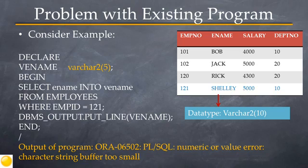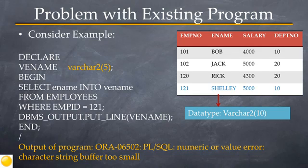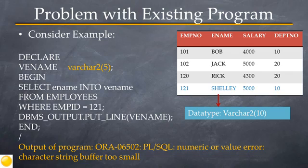Now that the row has been inserted, let's say the program discussed earlier is executed to retrieve the name of the employee whose employee number is 121. The variable vename was created to hold a value of 5 bytes or less. However, the name being retrieved — 'Shelley' — is 7 bytes in length, and the program will fail with the error: character string buffer too small.